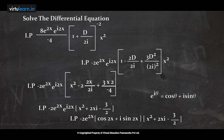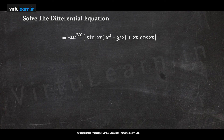Now apply Euler's formula: e^(iθ) = cos θ + i·sin θ, so e^(i2x) = cos(2x) + i·sin(2x). Multiply (cos2x + i·sin2x)·(x² + 2xi - 3/2). Extract only the imaginary part — terms containing i — from the expansion.